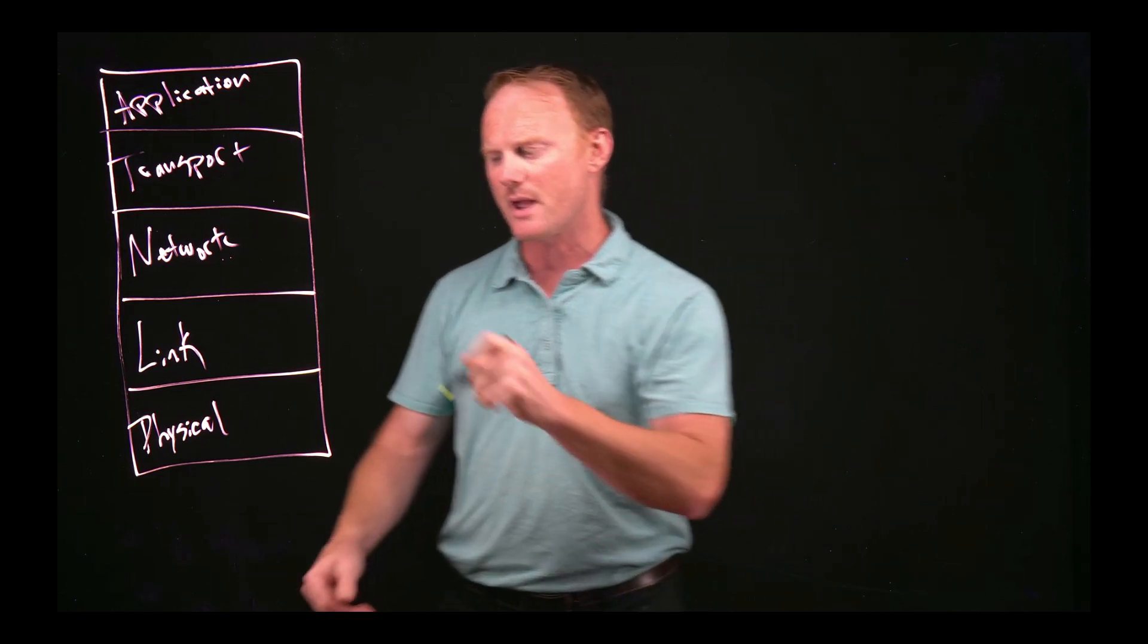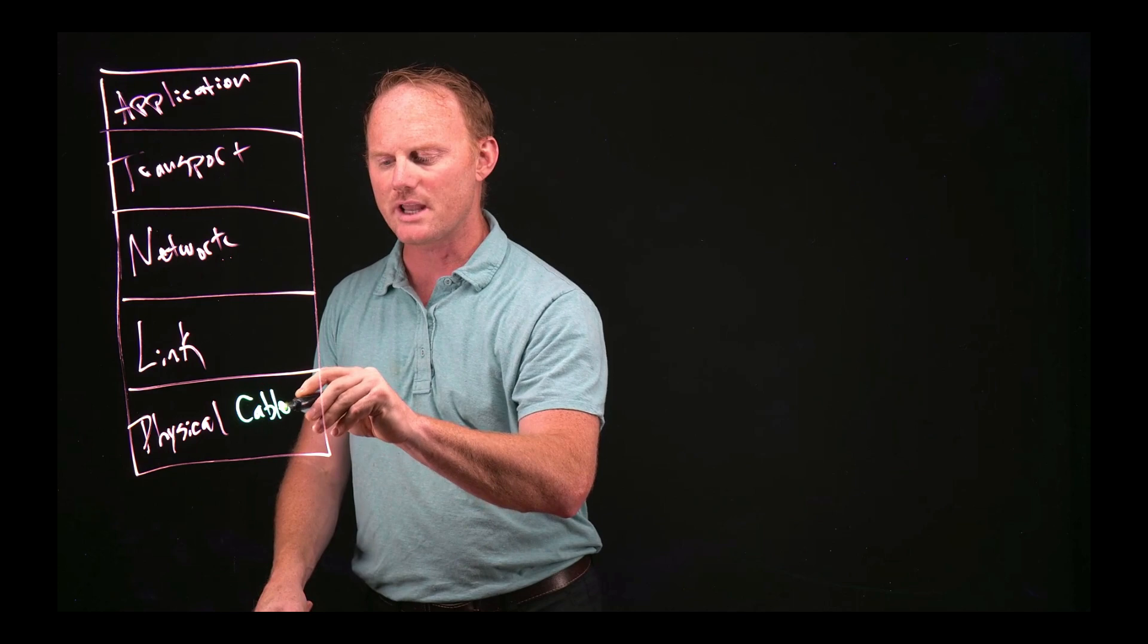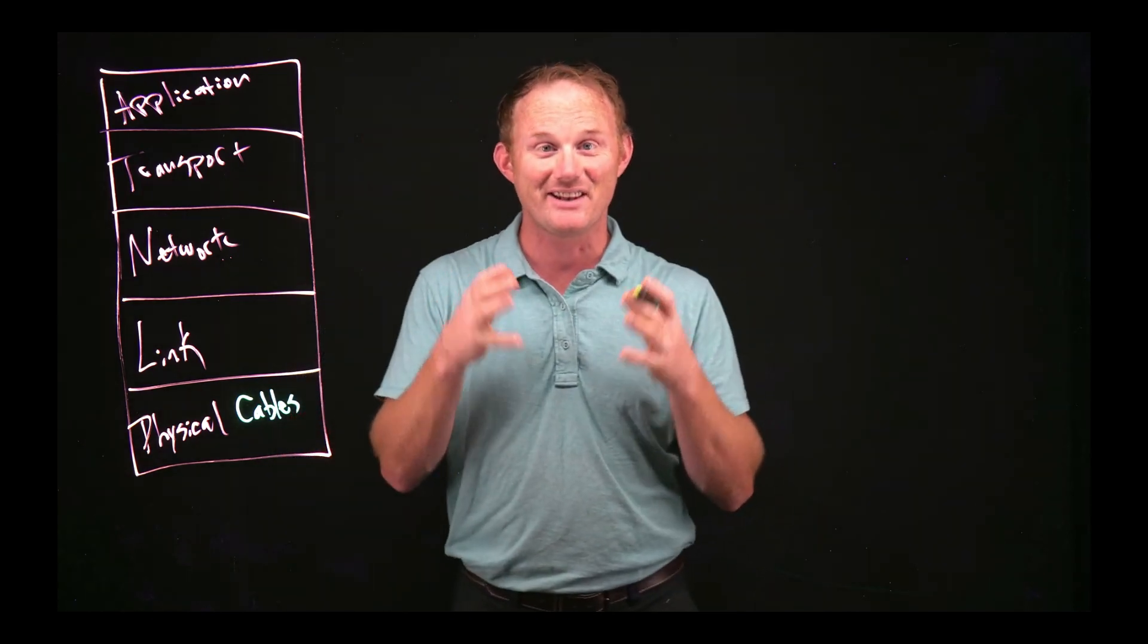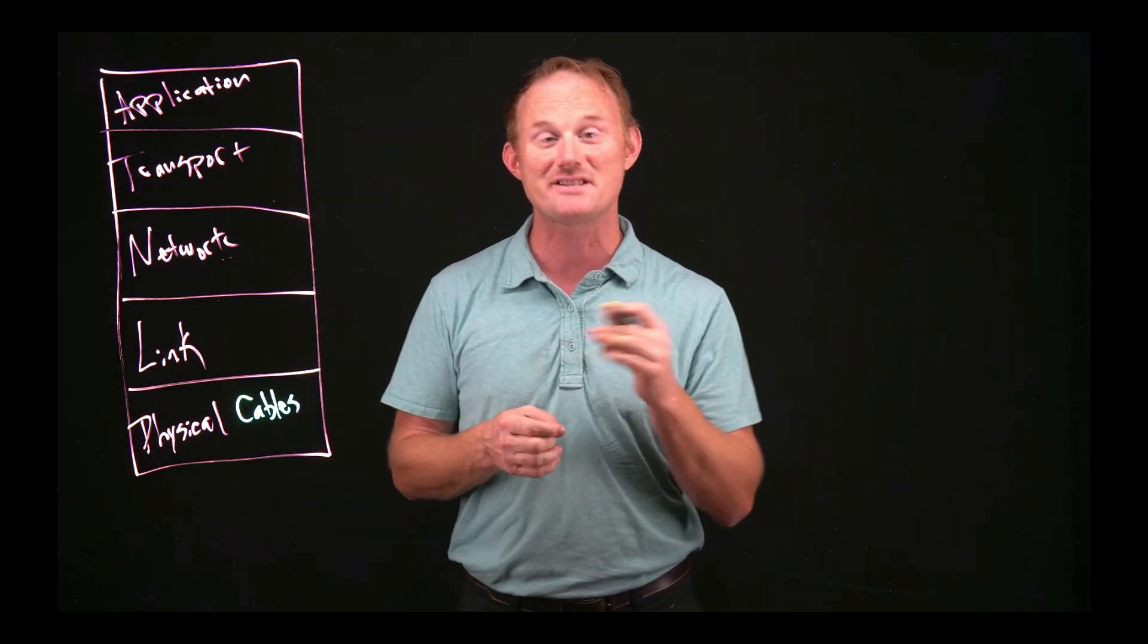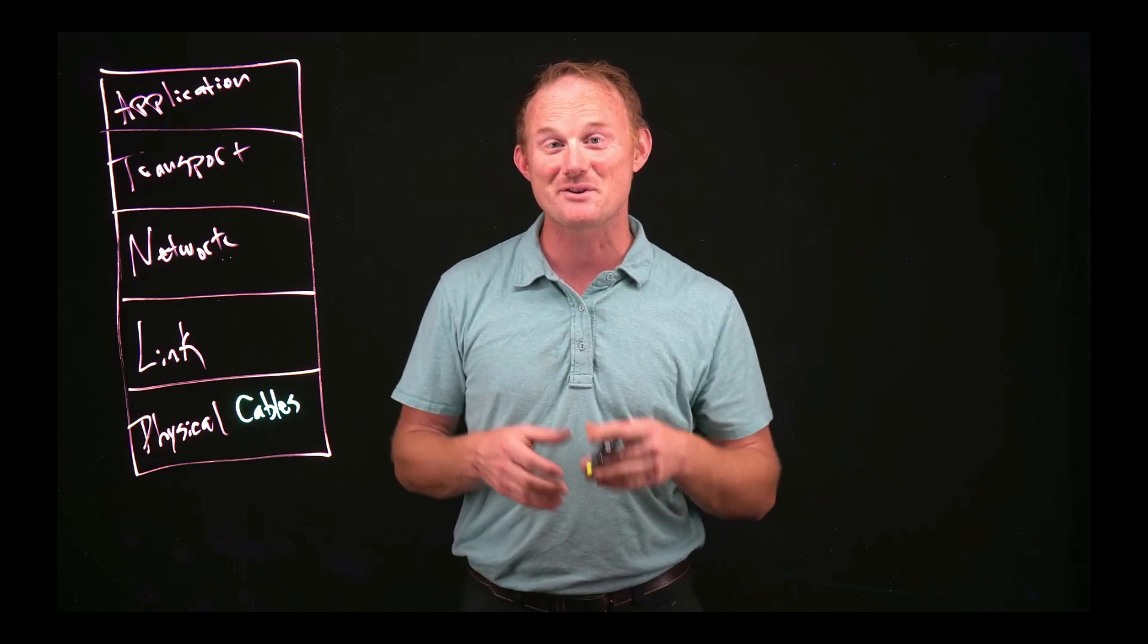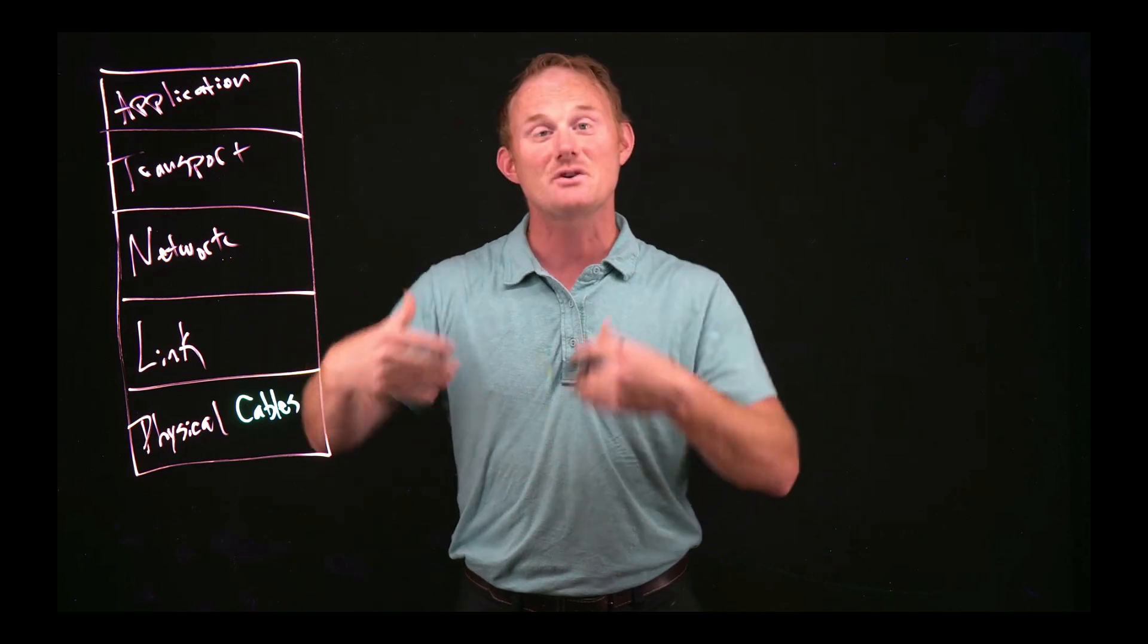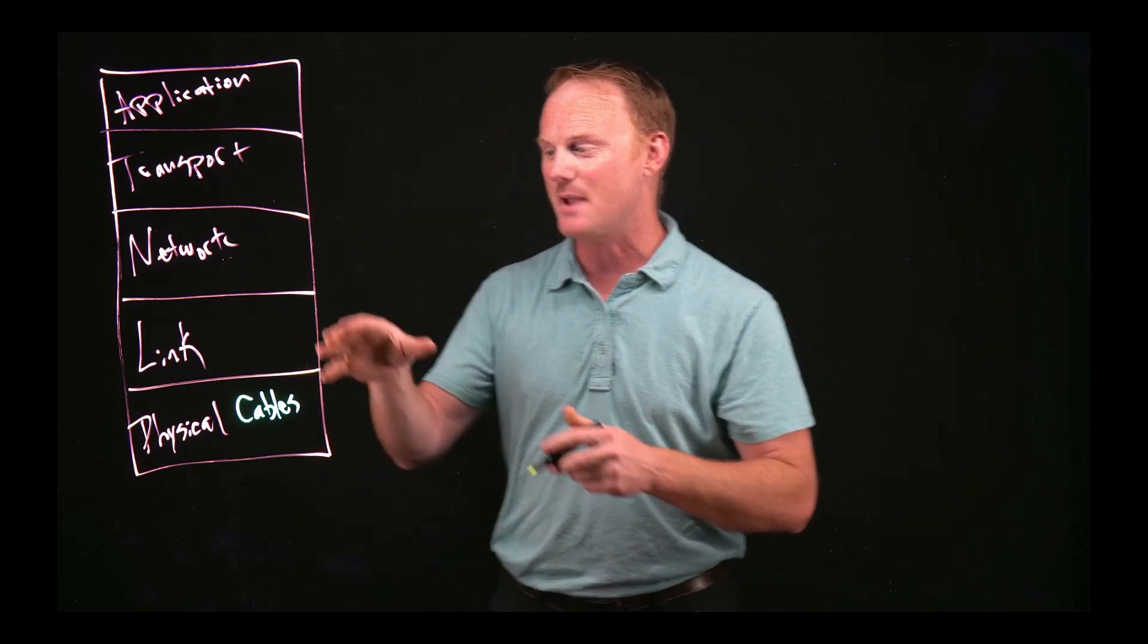So let's define each layer a little bit. The physical layer is going to be things like the actual cables. The literal cable that has electricity going through it. Computers are just ones and zeros. They're not really ones and zeros. They're really just is the electricity on or off. So the physical is easiest to think about as the cables.